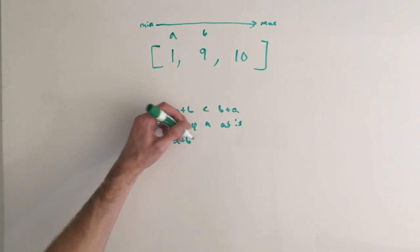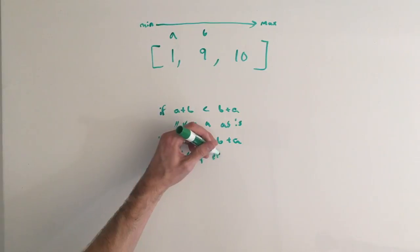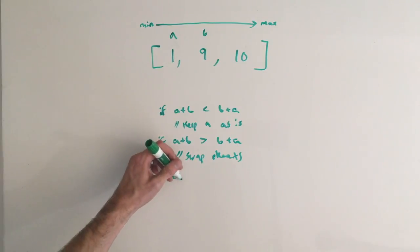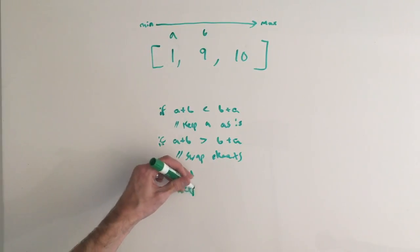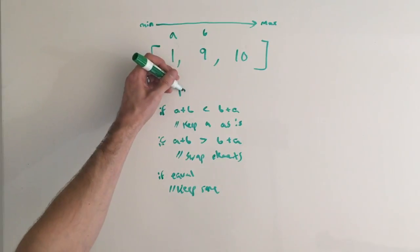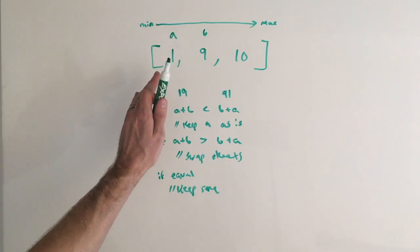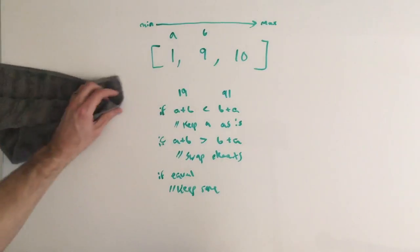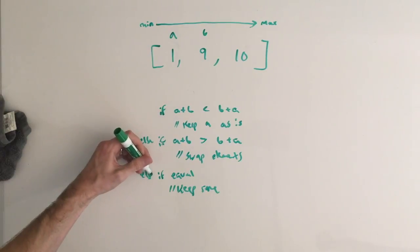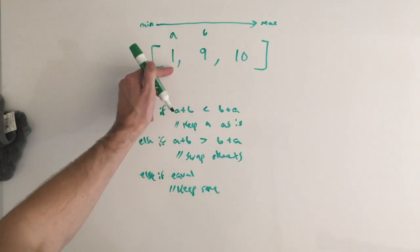So just to say keep A as is. Otherwise, if we have A plus B is greater than B plus A, we need to swap the elements. And if they're equal, keep the same. And so what we mean by this, if we were to check is one nine less than nine one. It is, so we can just go ahead and keep these numbers as is and then move on to the next check. In this case, we actually have else here and then we have else here, but it doesn't really matter because these won't equate to true unless the other one is false. So in this case, we know that one should come before the nine.